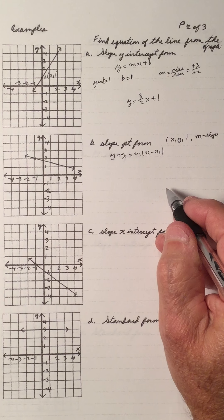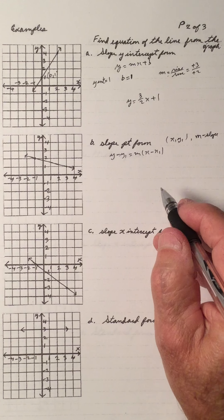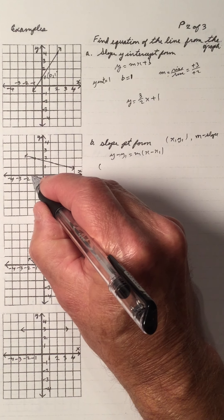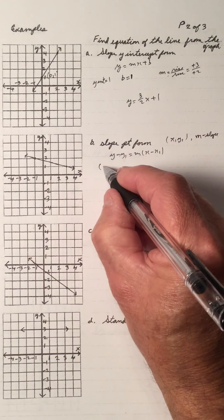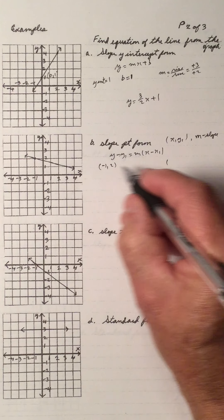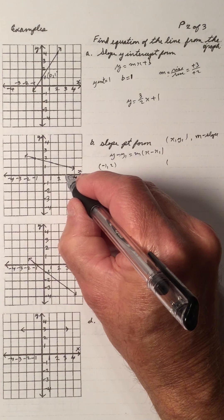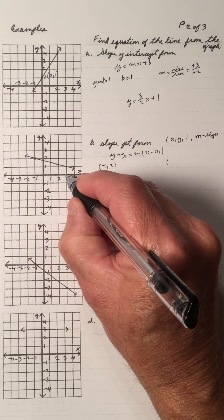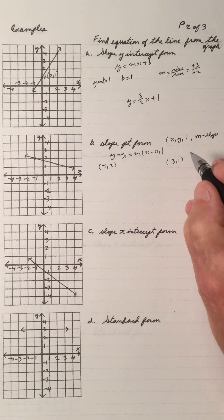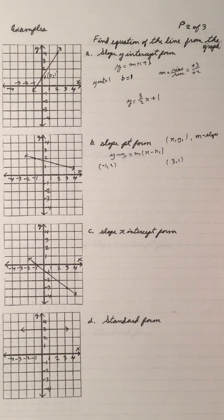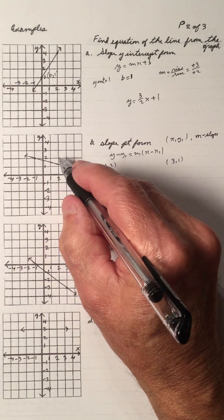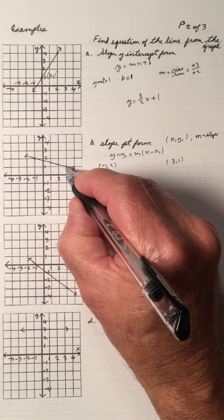We have two points. I have the point x is negative 1, y is 2. Or I have the point x is 3, y is 1. So I have two points and I can use either one. Let's find the slope — I can do the slope two ways.